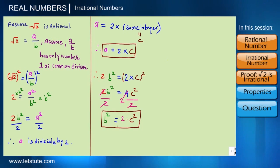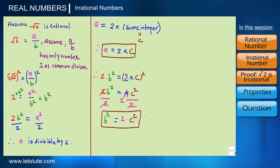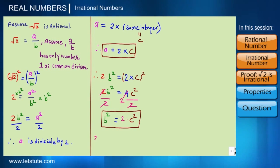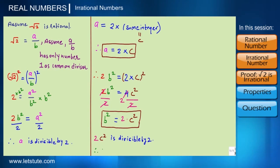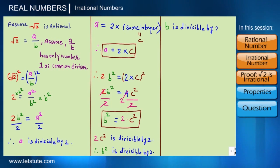By the same logic as before: since c is an integer, c² is an integer, and there is a multiplication of 2 in c², so 2c² is divisible by 2. Since b² = 2c², b² is divisible by 2, and therefore b is also divisible by 2.